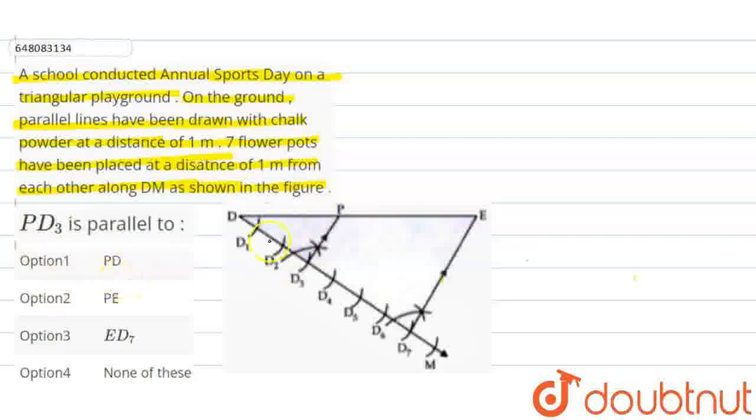First of all, the option is PD. This is PD3. This is PD which intersects on the P point. So, how will this be parallel? Wrong option.